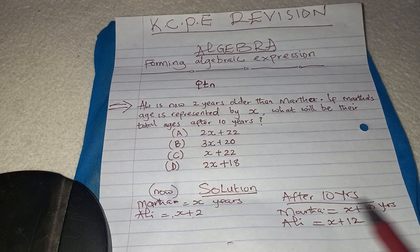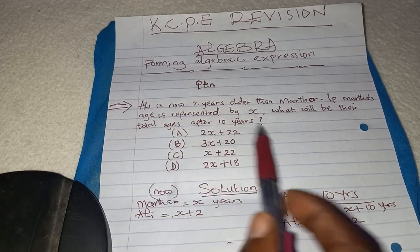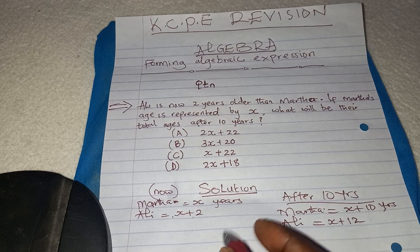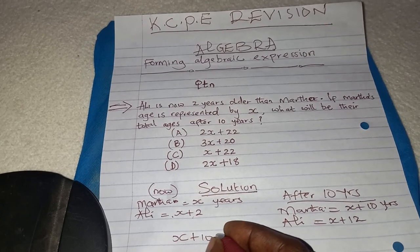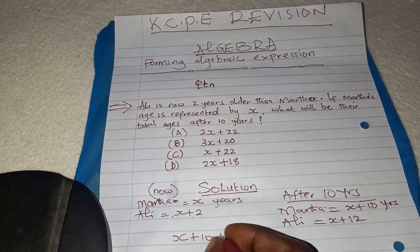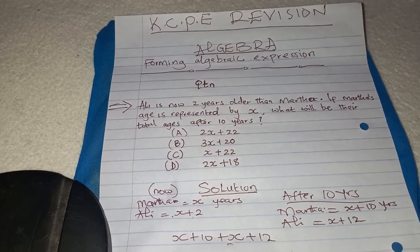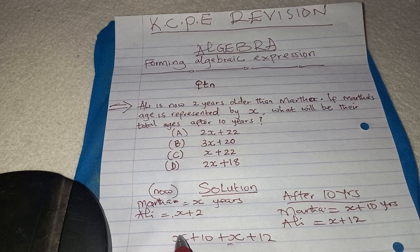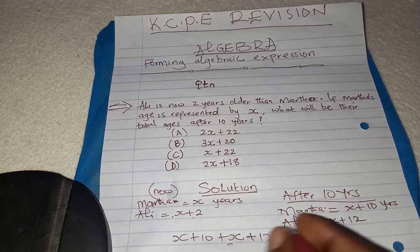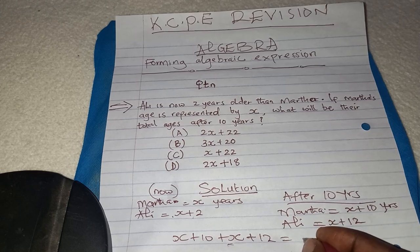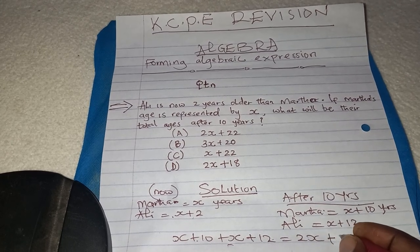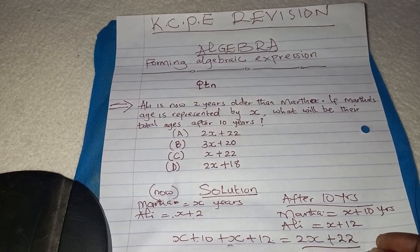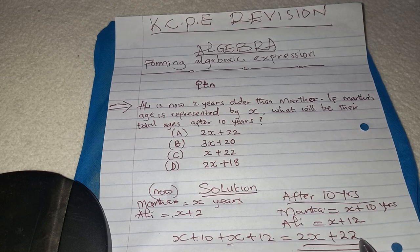So we have their ages after 10 years. The question is asking for the total ages after 10 years. Total ages means that we add the two: the age of mother, which is X plus 10, plus the age of Ali, which is X plus 12. After bringing them together, you bring like terms together, so we have 2X. Then we have 10 plus 12, which becomes 22. So in 10 years' time, their total age will be 2X plus 22.